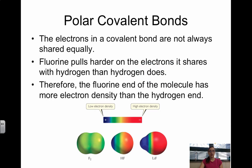So going along with polar covalent bonds, the electrons in the covalent bond aren't always shared equally like I discussed. Another picture down here is showing you how fluorine in HF pulls on the electrons more than hydrogen does, giving it that partial negative side.